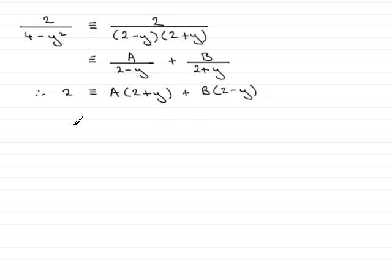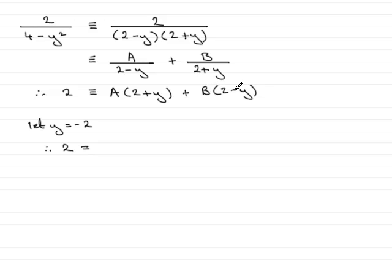Now we need to find the constants A and B. I'll make each bracket zero in turn. For the bracket (2 plus y), let y equal negative 2. That gives 2 equals — the first term vanishes — and we get 2 minus minus 2, which is 4B. So 2 equals 4B, divide both sides by 4, and B equals one half.